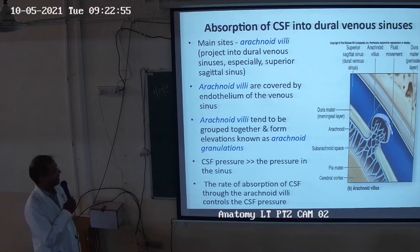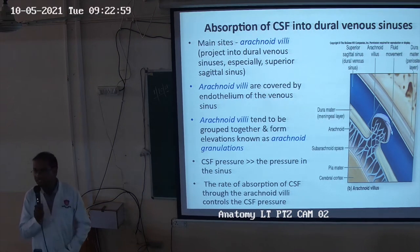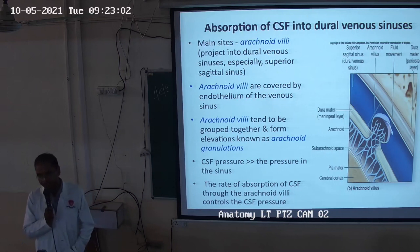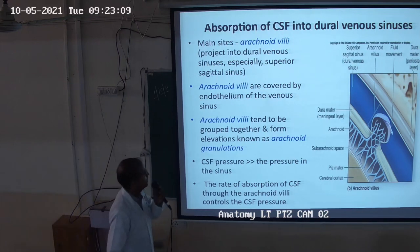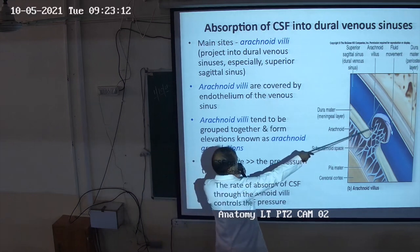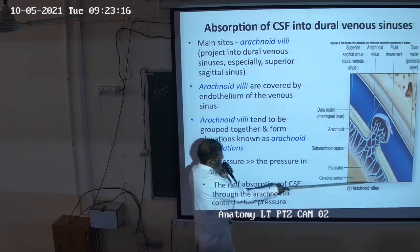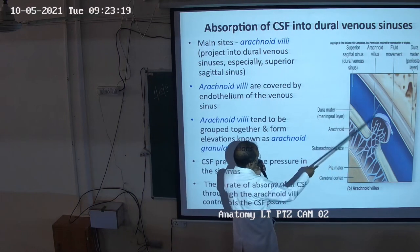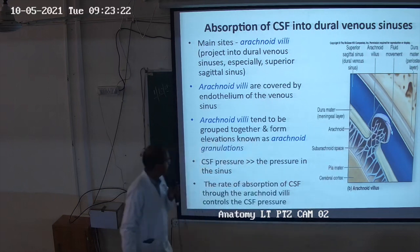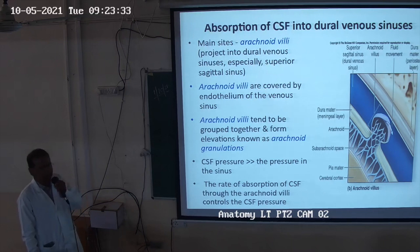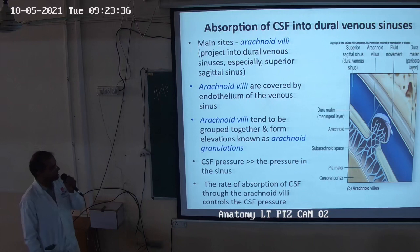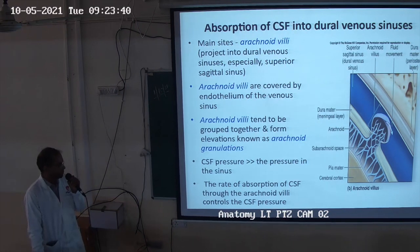The arachnoid villi project into the dural venous sinus, especially the superior sagittal sinus. Arachnoid villi tend to group together and form elevations known as arachnoid granules. When the CSF pressure is greater than the sinus pressure, the rate of absorption of CSF through the arachnoid villi controls the CSF pressure.